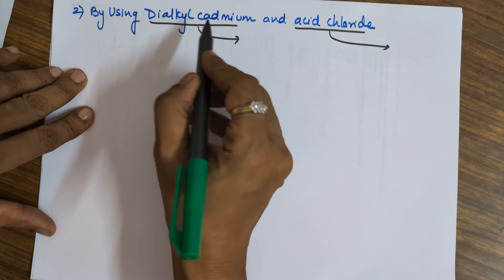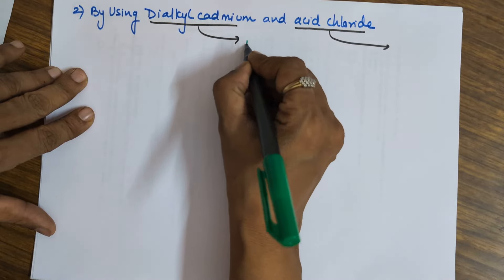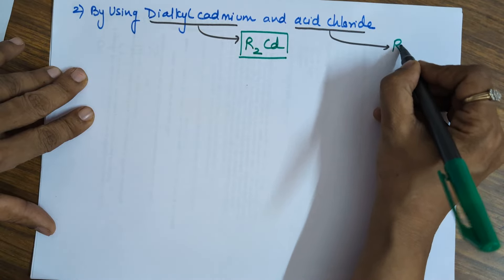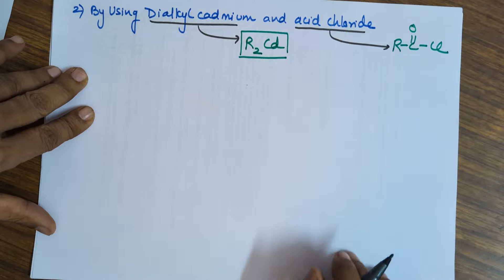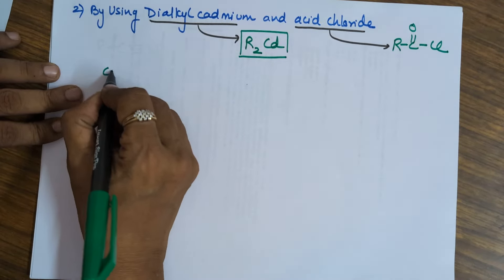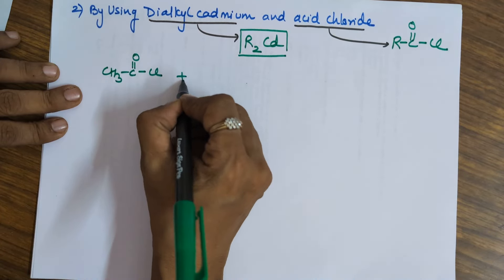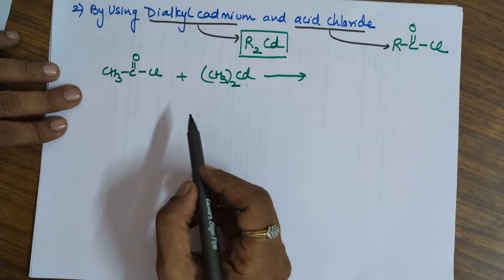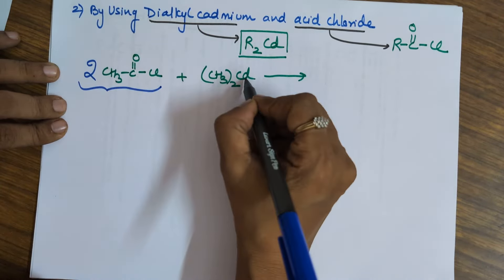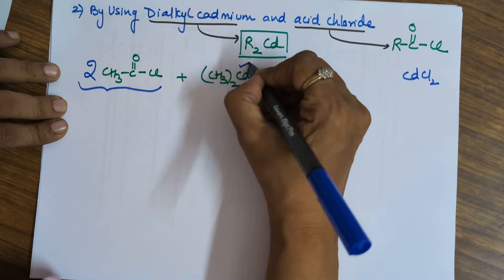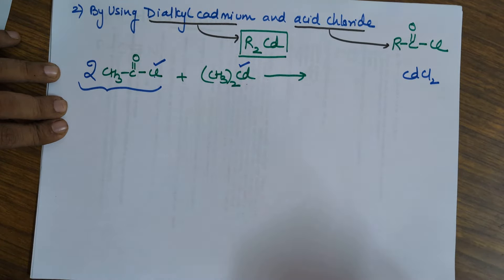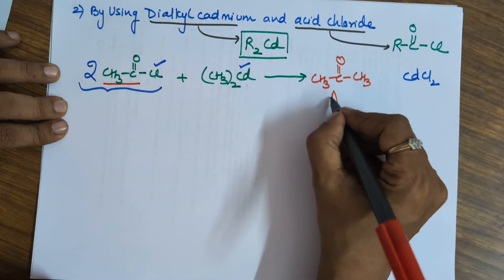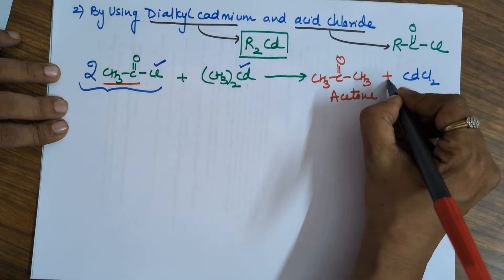This is the new method — we are using something called dialkyl cadmium. Dialkyl cadmium is this dialkyl with cadmium (valency of 2), reacting with acid chloride. Acid chloride is an R group with a C=O and a Cl. When these two react, you end up in a ketone. Taking a specific acid chloride and dimethyl cadmium — two molecules of acid chloride react with this, losing cadmium chloride twice. You end up with CH3CO two times plus a methyl, giving you acetone again. The by-product is cadmium chloride.